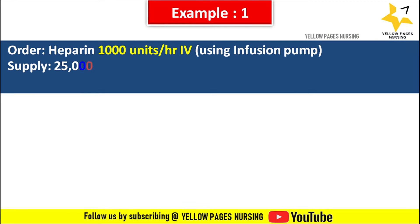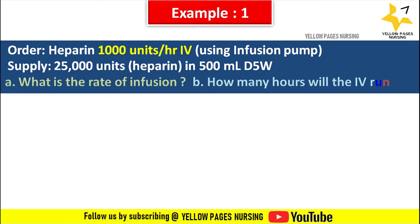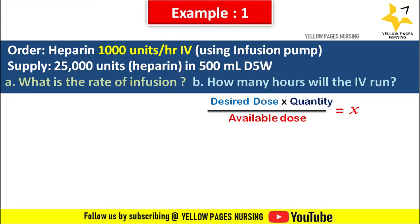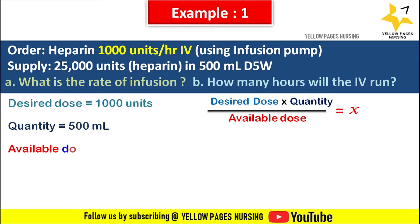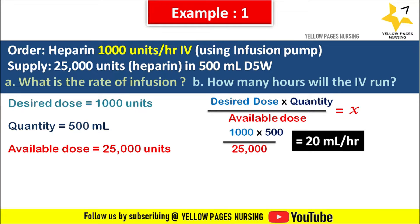Doctor's order is heparin 1,000 units per hour IV using infusion pump. Supply is 25,000 units heparin in 500 ml D5 water. What is the rate of infusion? The formula is: desired dose multiplied by quantity, divided by available dose, equals x. Here the desired dose is 1,000 units, quantity is 500 ml, and available dose is 25,000 units.